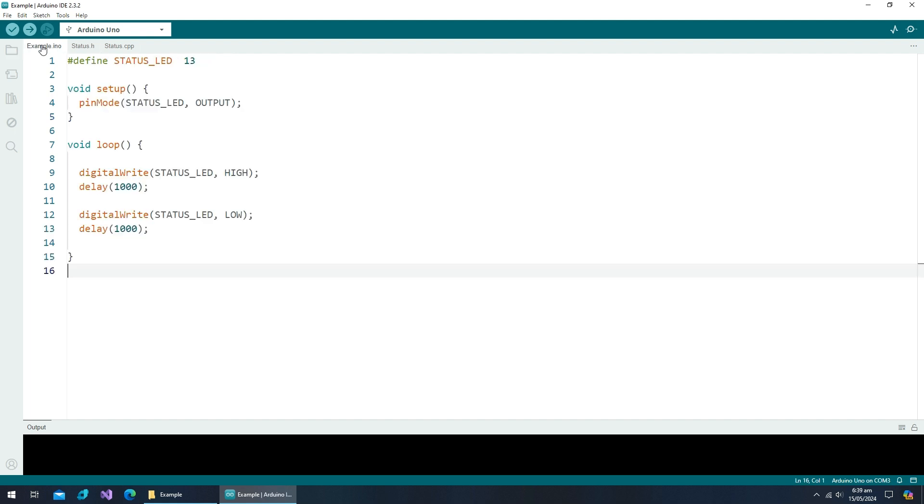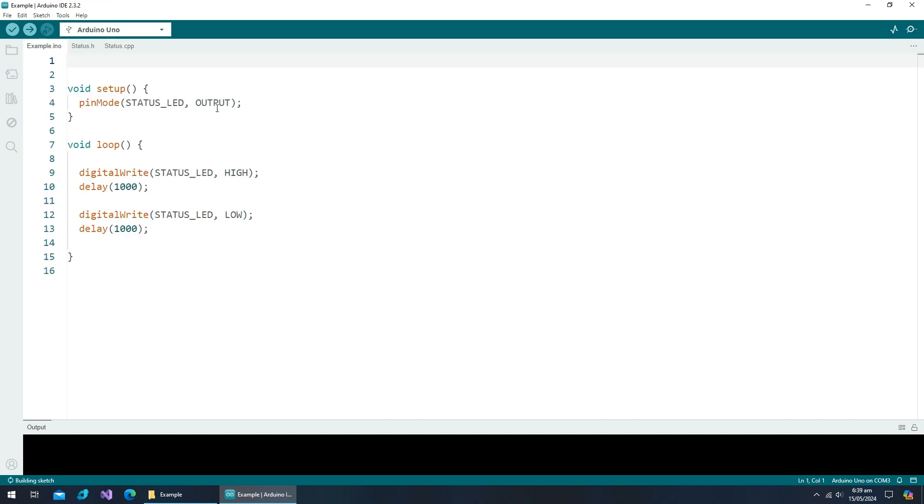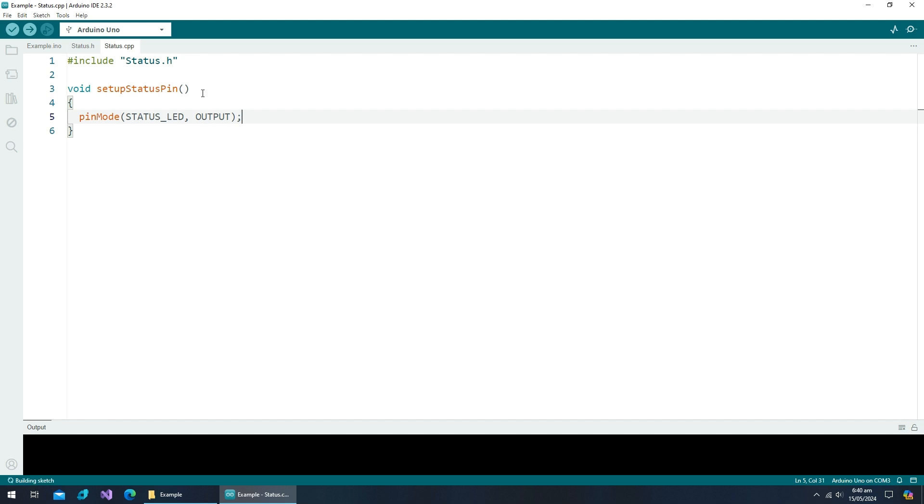Let's start moving relevant things. This status LED's pin number belongs to the status.h file. As we will be using this pin number in the CPP file, so we have to include the header file there. Setting up the status pin belongs to our status handling area. So, let's create a function for this purpose and do the setup in it. Declaration of this function goes to the header file for being used outside.